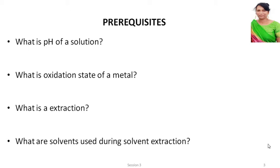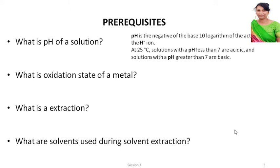Let me help you a little bit. What is pH of a solution? pH is the negative of the base-10 logarithm of the activity of H+ ion. pH equals minus log₁₀ of the concentration of H+. At 25 degrees, solutions with pH less than 7 are acidic and solutions with pH greater than 7 are basic.